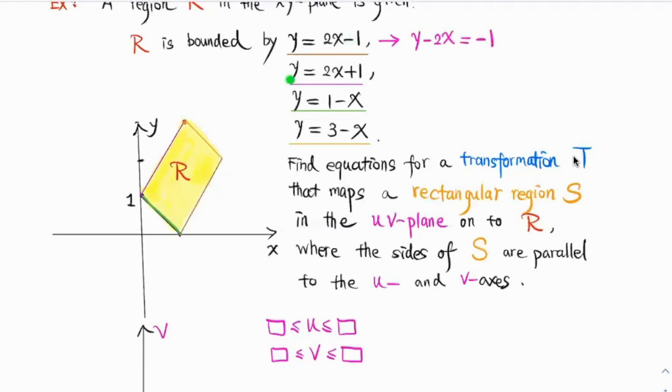Also, in the second equation here, keep this one. I also come up with Y minus 2X equals 1. Notice that here you have Y minus 2X, and here you also have Y minus 2X.